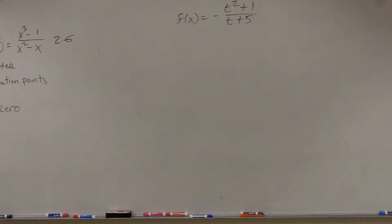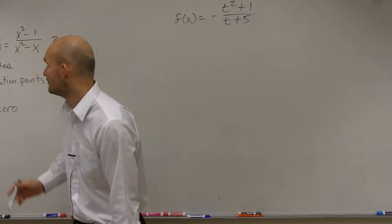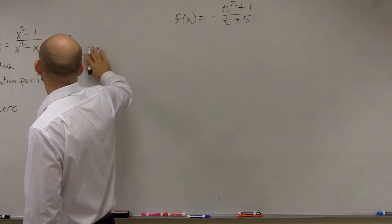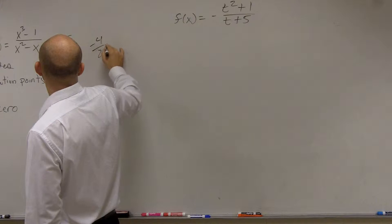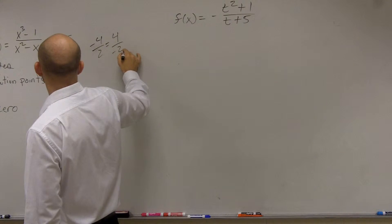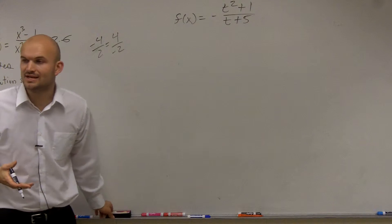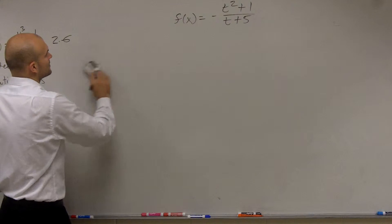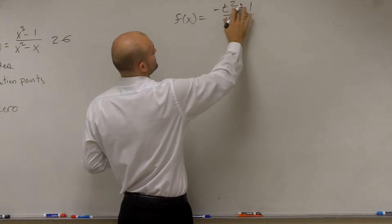If you remember, when we're dealing with slope, our negative sign can go on the top or the bottom. You guys remember a linear equation with a negative number? Negative 4 over 2 is equal to 4 over negative 2, right? It's the same thing. So it doesn't matter where my negative sign is going to go. So what I'm going to do is, for this problem, I am just going to distribute that negative sign throughout.